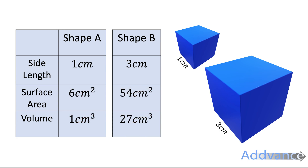So you should have worked out by now: the surface area of the smaller shape is 6 centimetres squared and the surface area of the bigger shape is 54 centimetres squared. The volume is 1 centimetre cubed and the bigger volume is 27 centimetres cubed. The pattern I want you to see is that to go from the smaller side length to the bigger side length, you multiply by 3. To go from the smaller surface area to the bigger surface area, you multiply by 9. And to go from the smaller volume to the bigger volume, you multiply by 27.